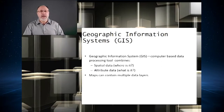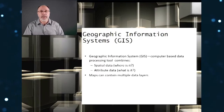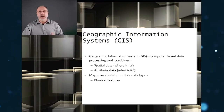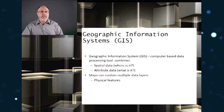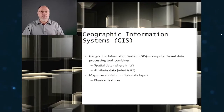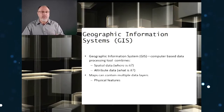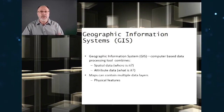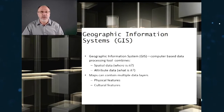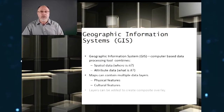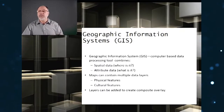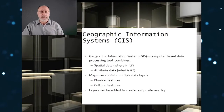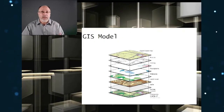Many different types of information can be compared and contrasted using GIS. These systems include data about people — population, income, education level — as well as information about the landscape, such as location of streams, different kinds of vegetation, and different kinds of soil. This technology uses layers, as you can see.